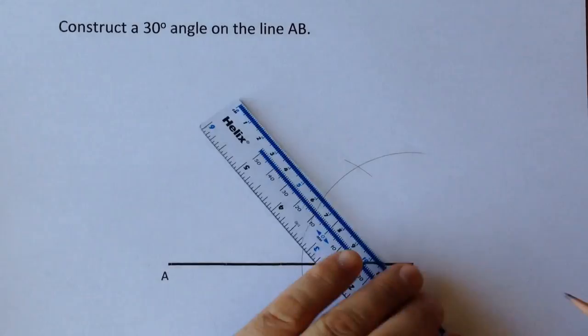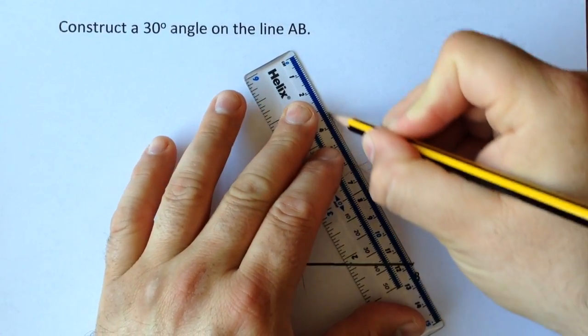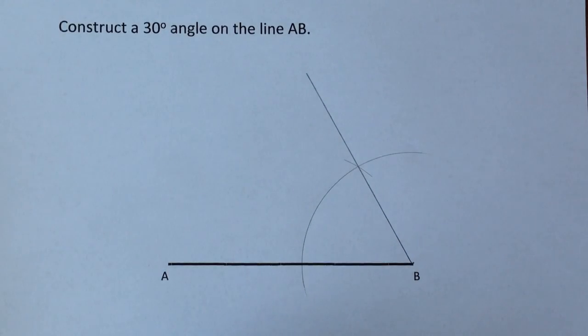With your pencil and your ruler from B draw a line straight through where the two arcs meet. Now you've got your 60 degree angle but you need to bisect that.